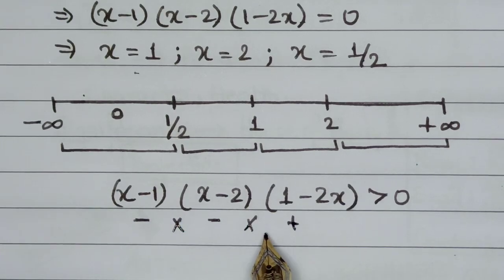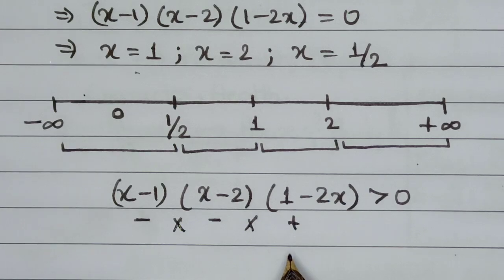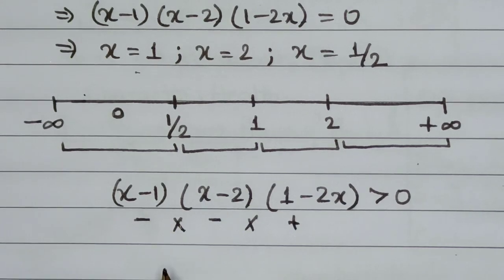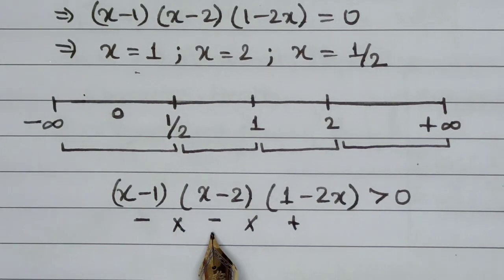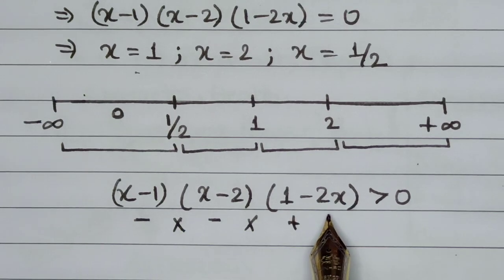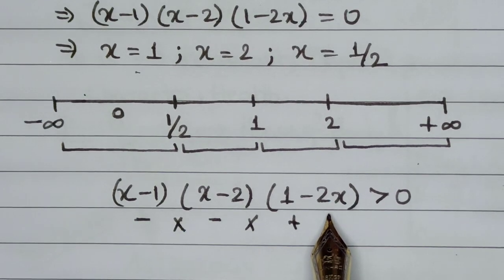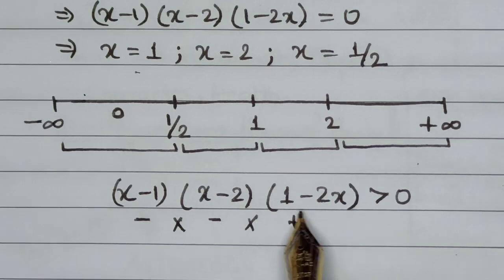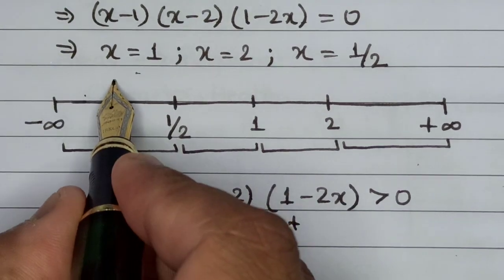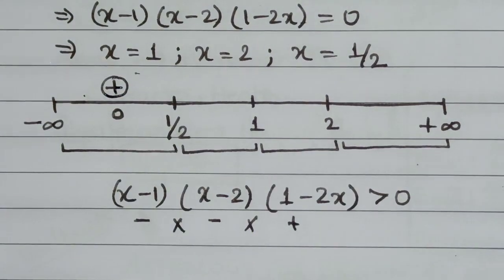So: negative into negative into positive. Let us verify — 0 minus 1 is minus 1, 0 minus 2 is minus 2, and 1 minus 2×0 is 1 minus 0, which is positive. So the overall outcome is positive. I write plus for this range.